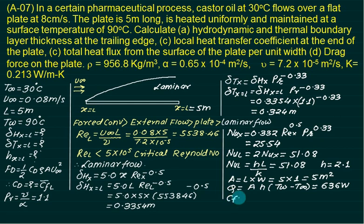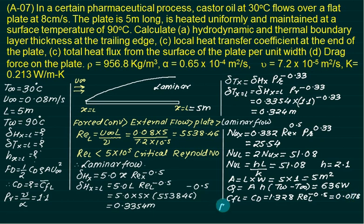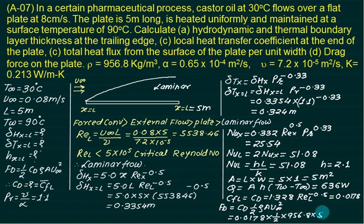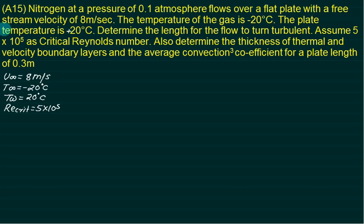For drag force, we first calculate CfL, which equals CD. The correlation is: CfL = 1.328 × ReL^(−0.5). With ReL = 5538, CfL = 0.0178. The drag force is: F = 0.5 × CD × rho × A × U_infinity². Substituting CD = 0.0178, rho = 956.8 kg/m³, A = 5 m², and U_infinity = 0.08 m/s, the drag force is approximately 0.272 N.